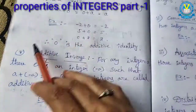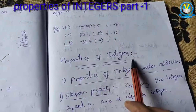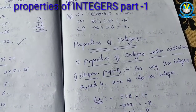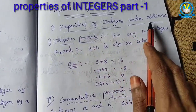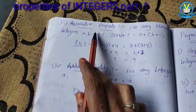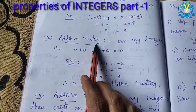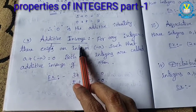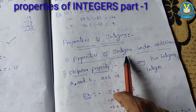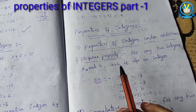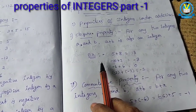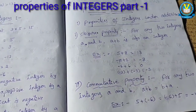These are called the properties of integers under addition. These 5 properties are: first, closure property; second, commutative property; third, associative property; fourth, additive identity; and fifth, additive inverse. These 5 properties are called properties of integers under addition. You have to learn and understand these in this video. Thank you.